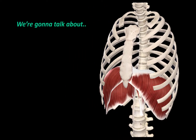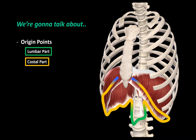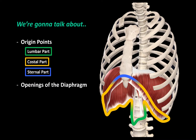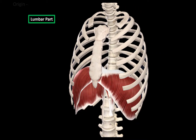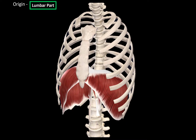In this video, we're first going to cover the three origin points, which are the lumbar part, the costal part, and the sternal part. After that, we're going to look at the openings of the diaphragm — basically which structures go through it. And then we will see what type of coverings it has from both sides. So let's start with the origin points and do the lumbar part first.